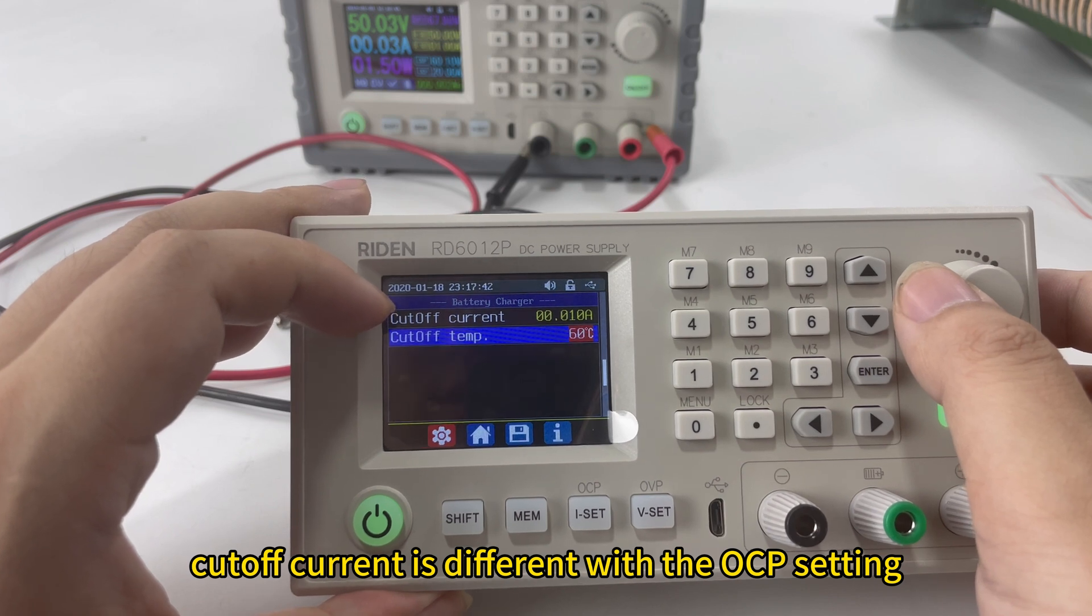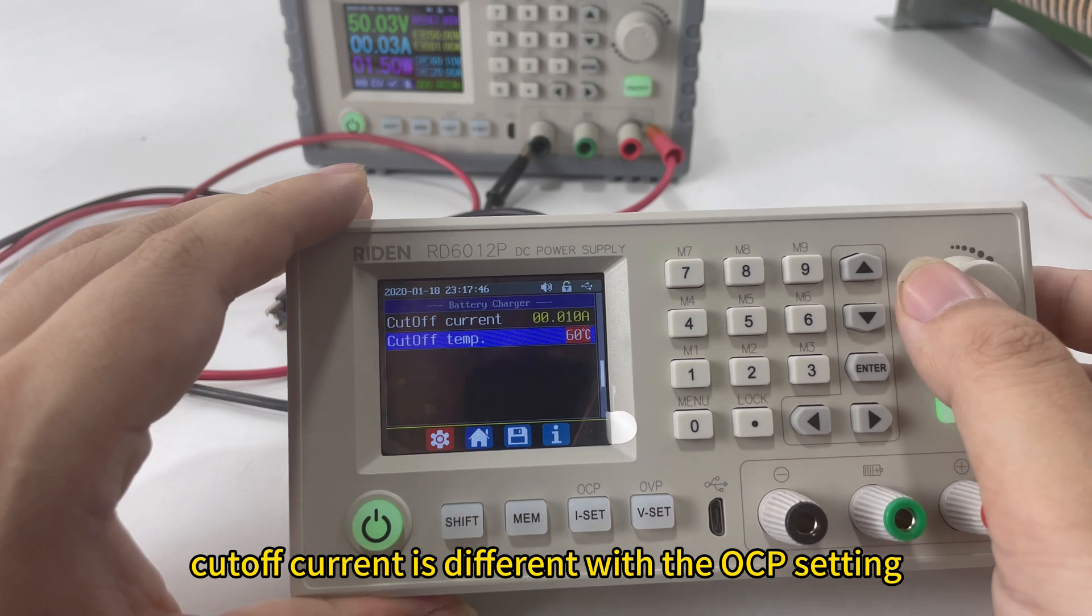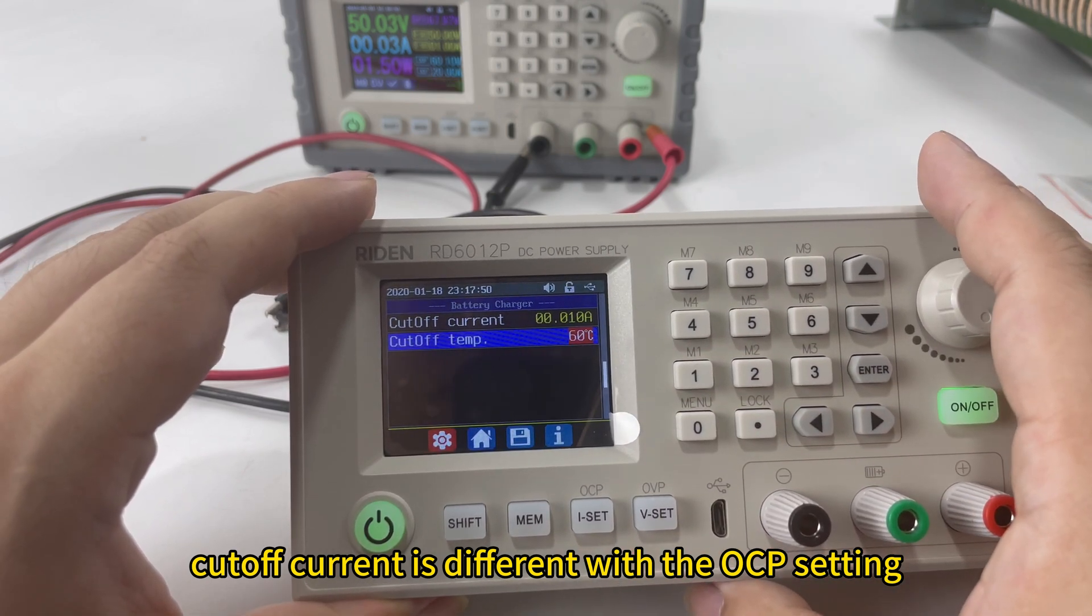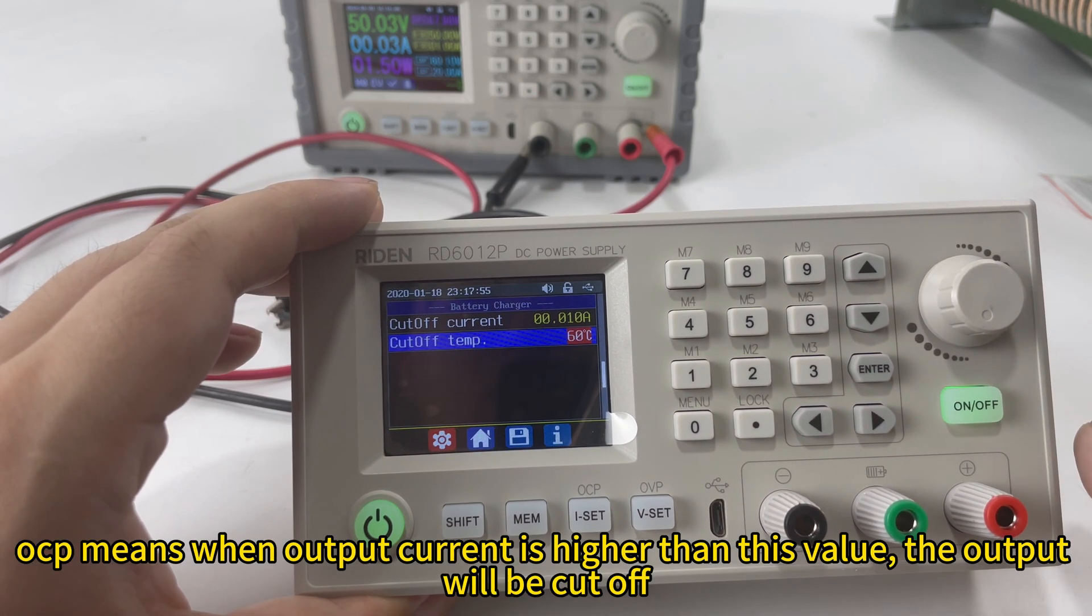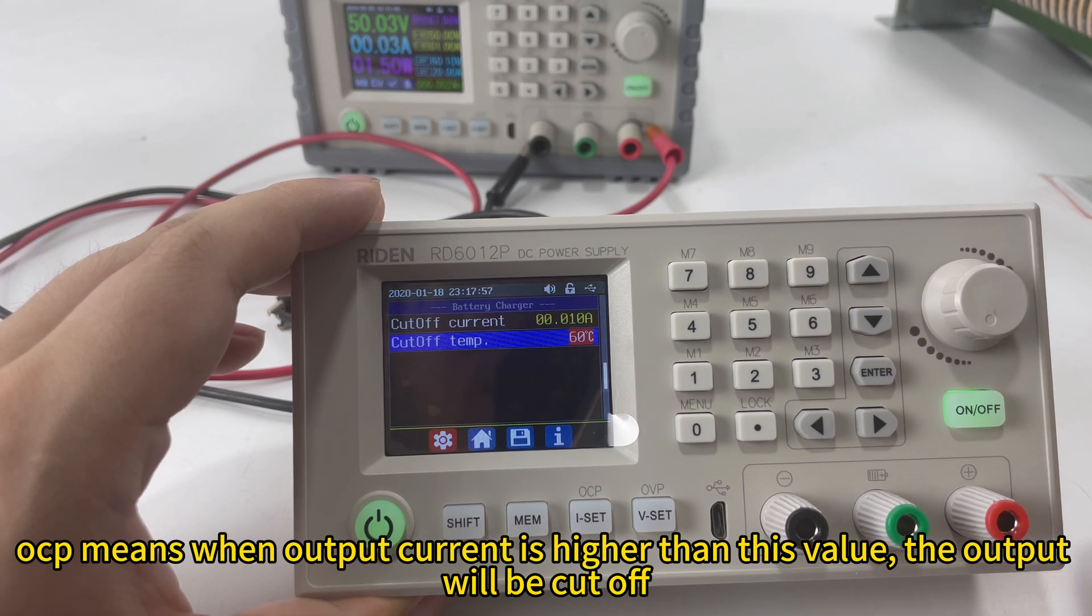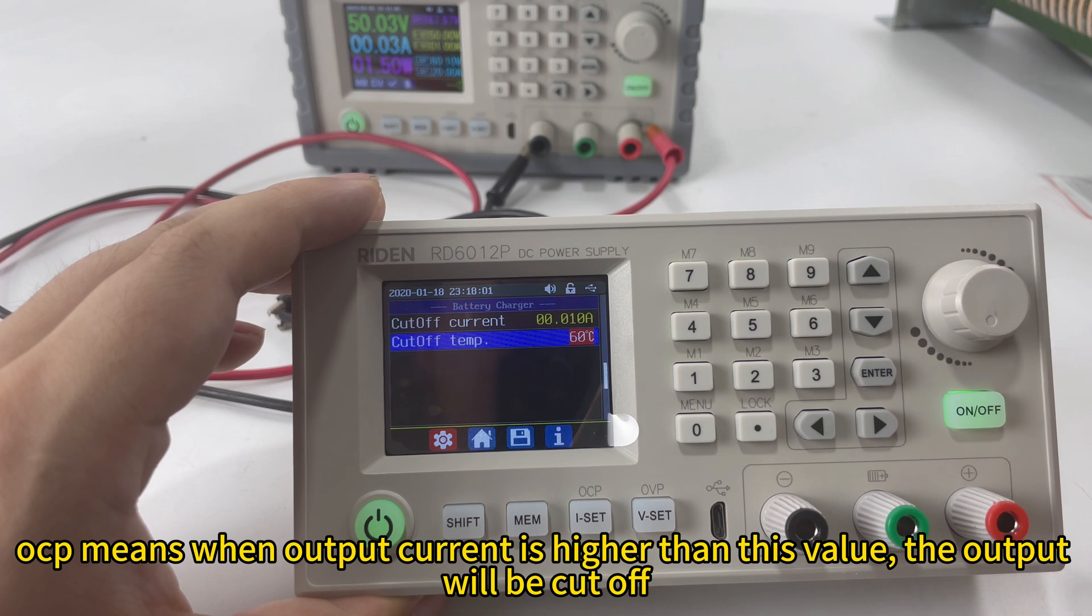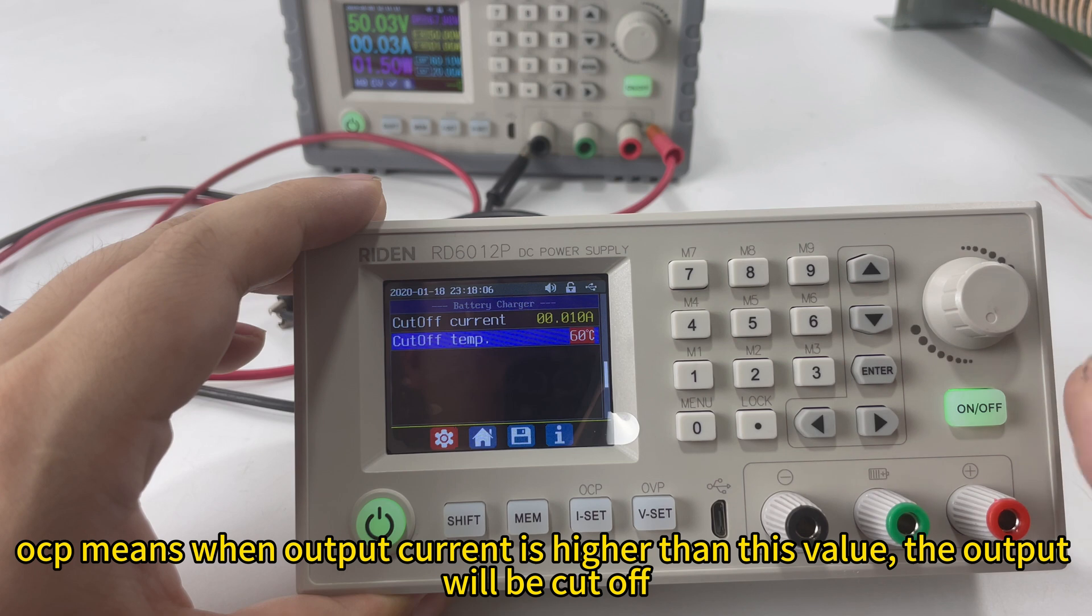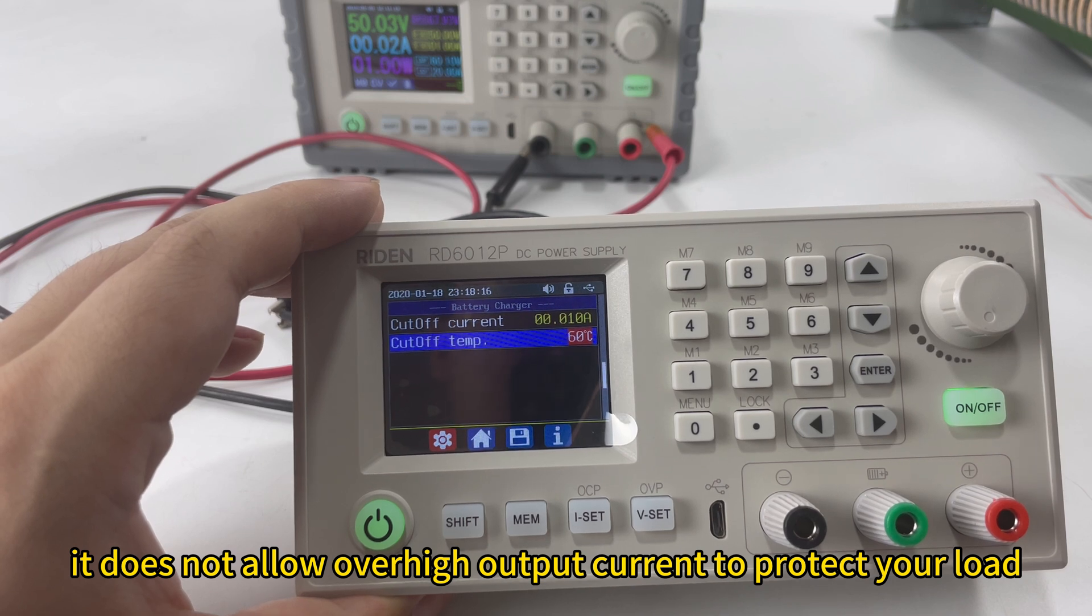For the cutoff current setting, some customers will mix it up with the overcurrent protection setting. There are two different settings. Overcurrent protection means if the output current is higher than this value, the output will be cut off by the protection. It does not allow over-high output current to protect your load.